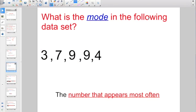The mode in the following data set. Remember, the mode means the number that appears most often. Here I have a 9, and here I have another 9. So, my mode in this case is going to be 9.